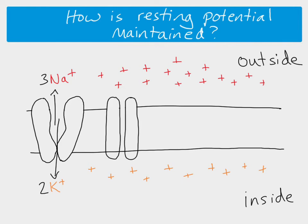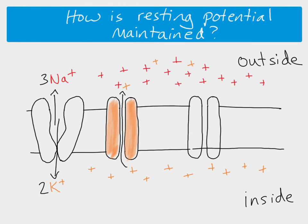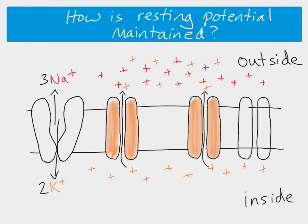We've also got channel proteins. This channel protein is a potassium channel protein. A few potassium ions move through the channel protein, and the reason they're moving this way is because we have a potassium ion concentration gradient — high concentration inside, lower concentration outside. And we have lots of these channels. More potassium ions move through from inside to outside. So what's happened is we've increased that potential difference even more — we've now got an even greater number of positive charges outside compared to inside, making that potential difference even greater.